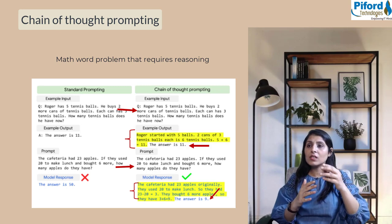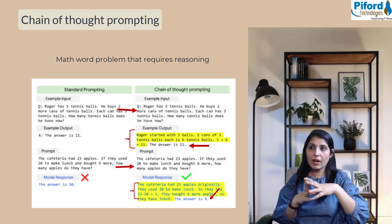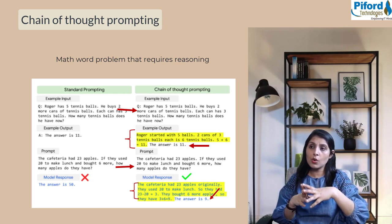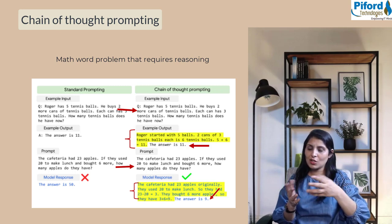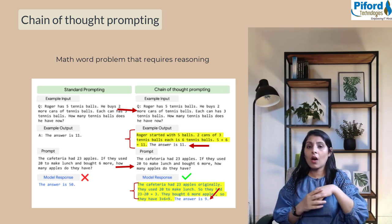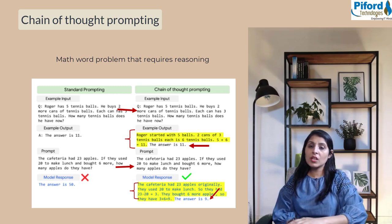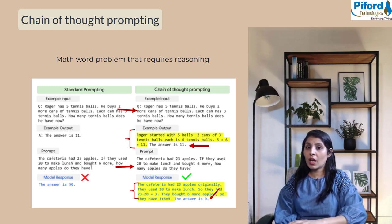In this example we've given a question, answer, and reason. Then we ask a question to the model and it replies with correct output and provides us a reason. This is how chain of thought prompting works.